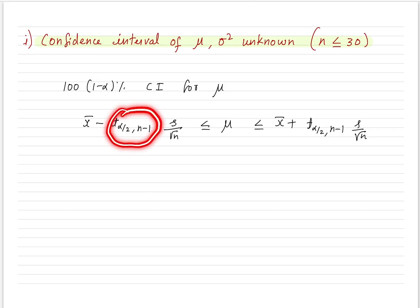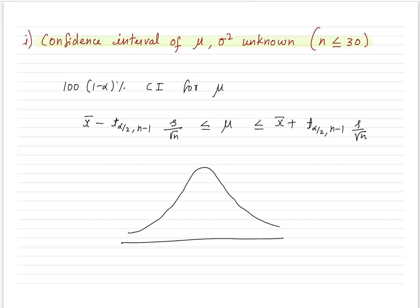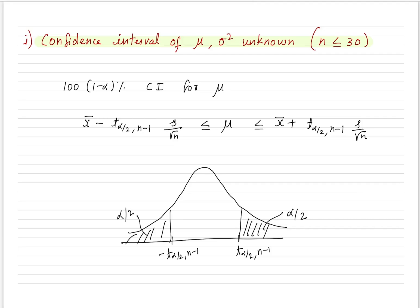Here, t(alpha/2, n-1) is the t value which leaves an area alpha/2 to the right. The t random variable has n minus 1 degrees of freedom. Due to symmetry, minus t(alpha/2, n-1) leaves an area alpha/2 to the left — the same structure as the normal distribution. This gives us the confidence interval.